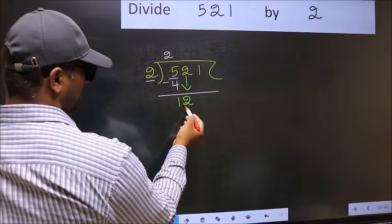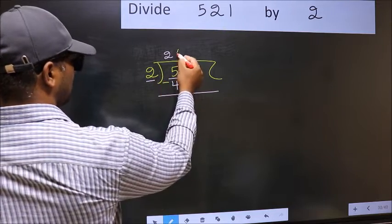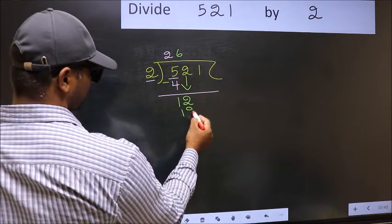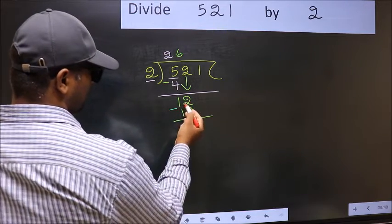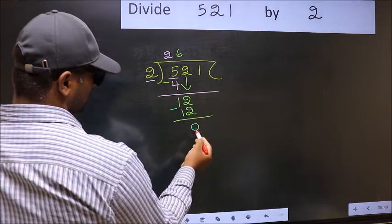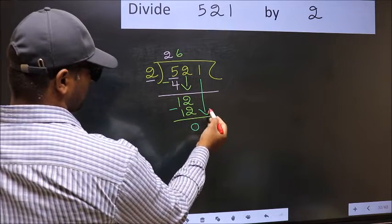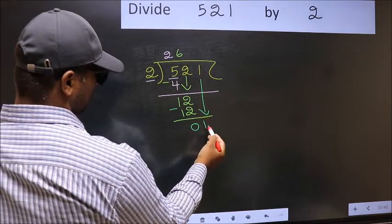Now 12. When do we get 12 in 2 table? 2, 6, 12. Now you should subtract. 12 minus 12, 0. After this, bring down the beside number. So 1 down.